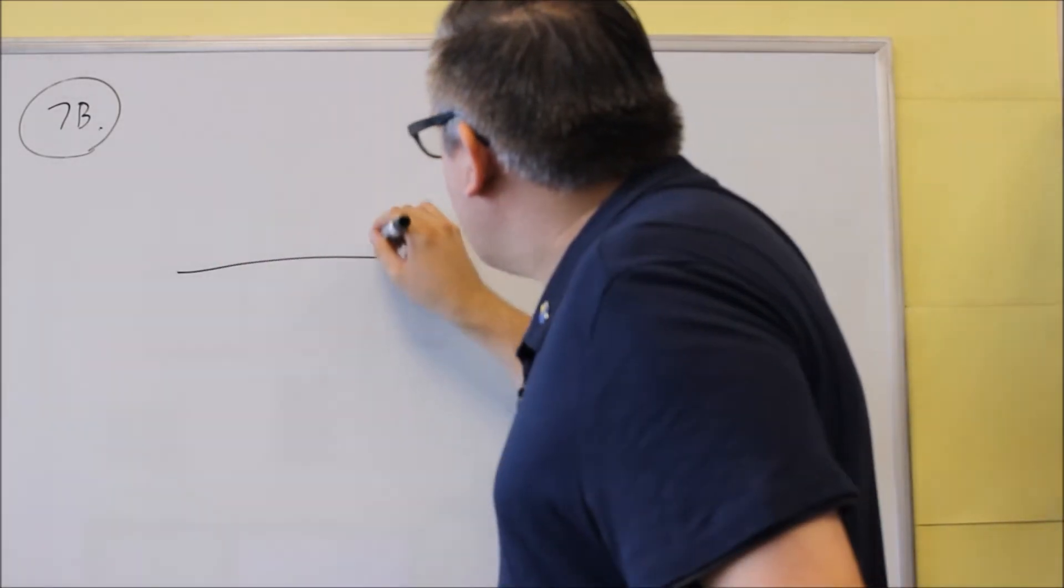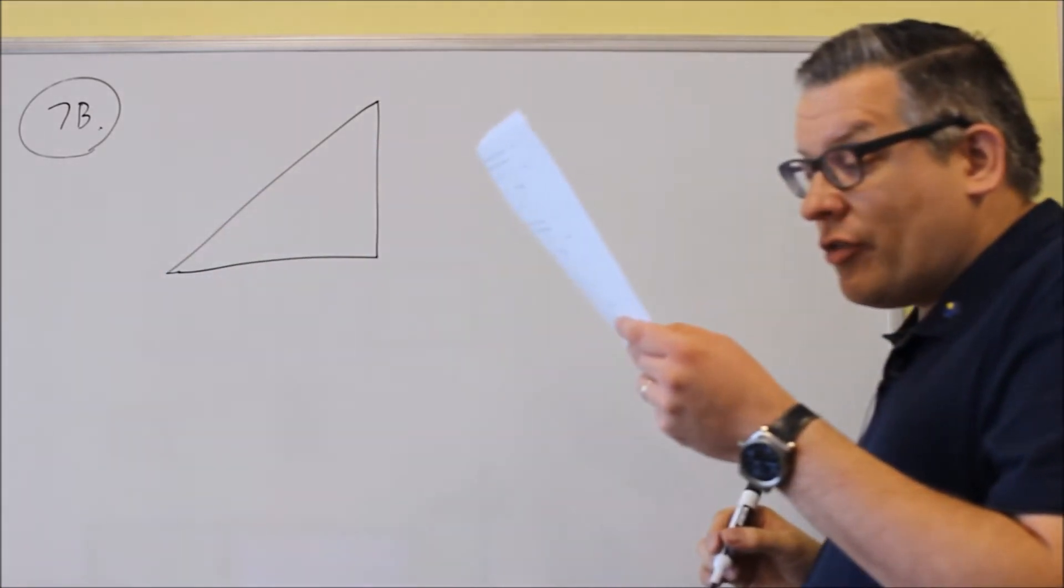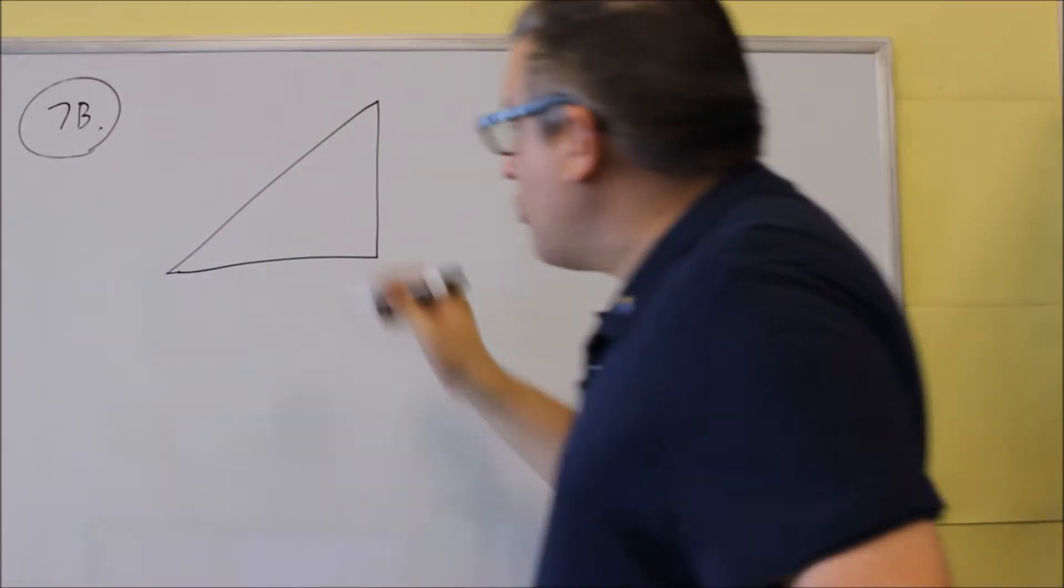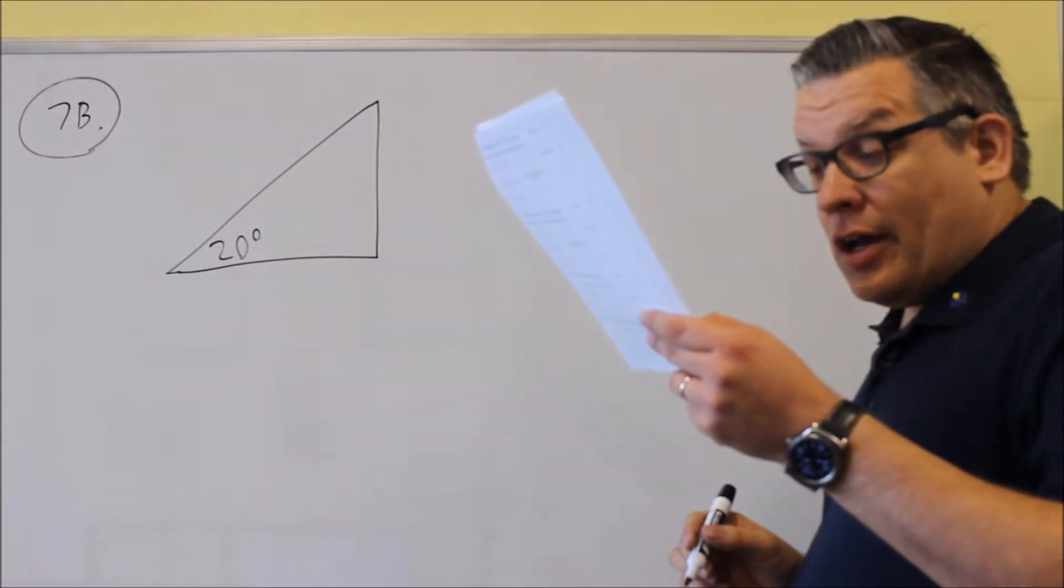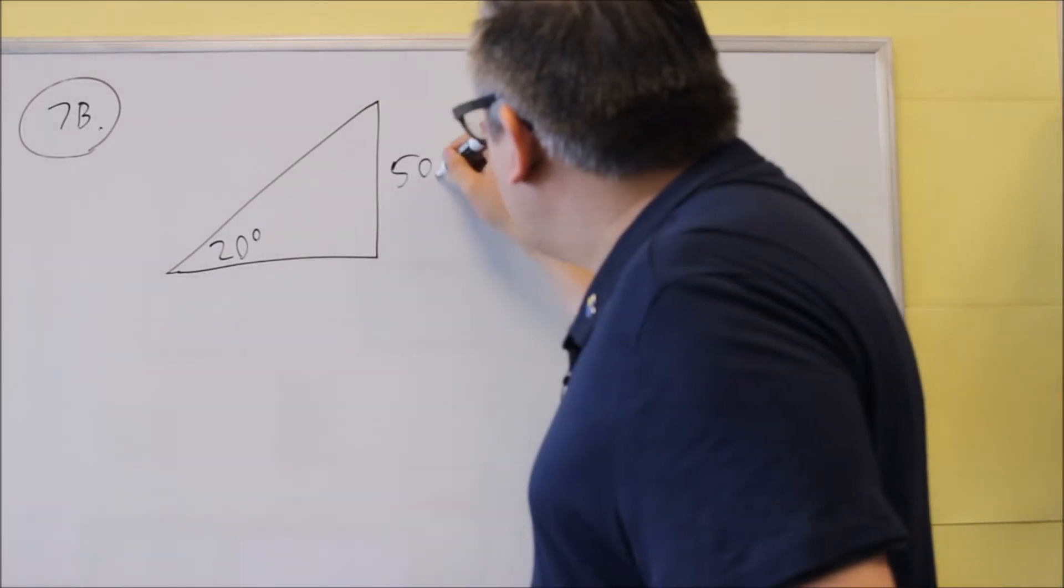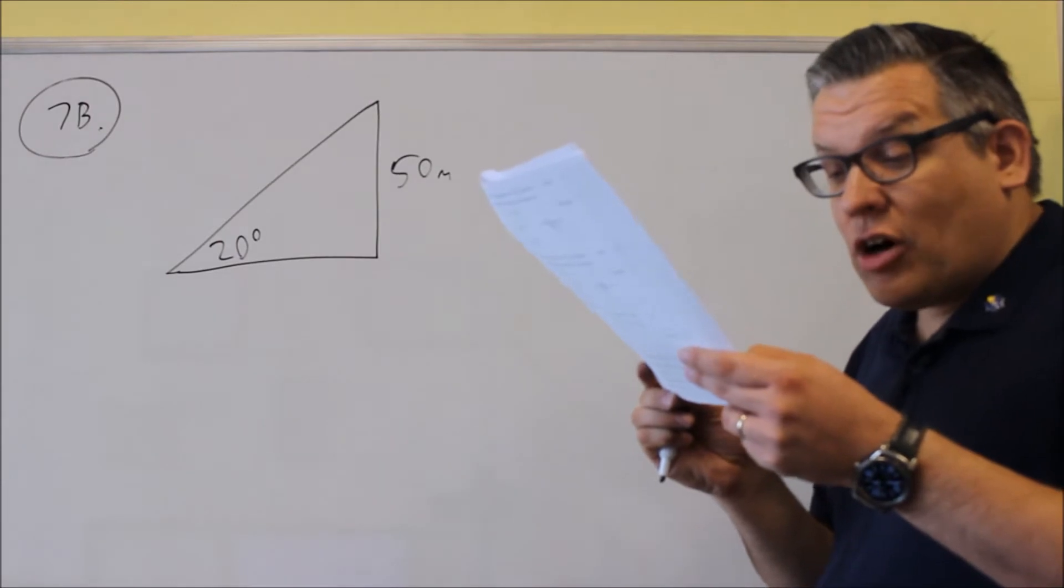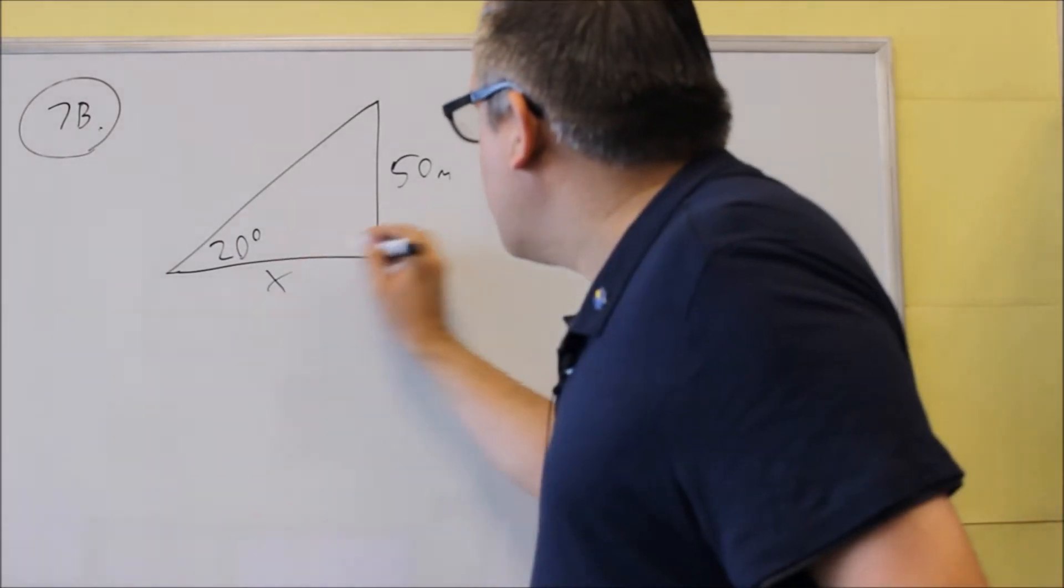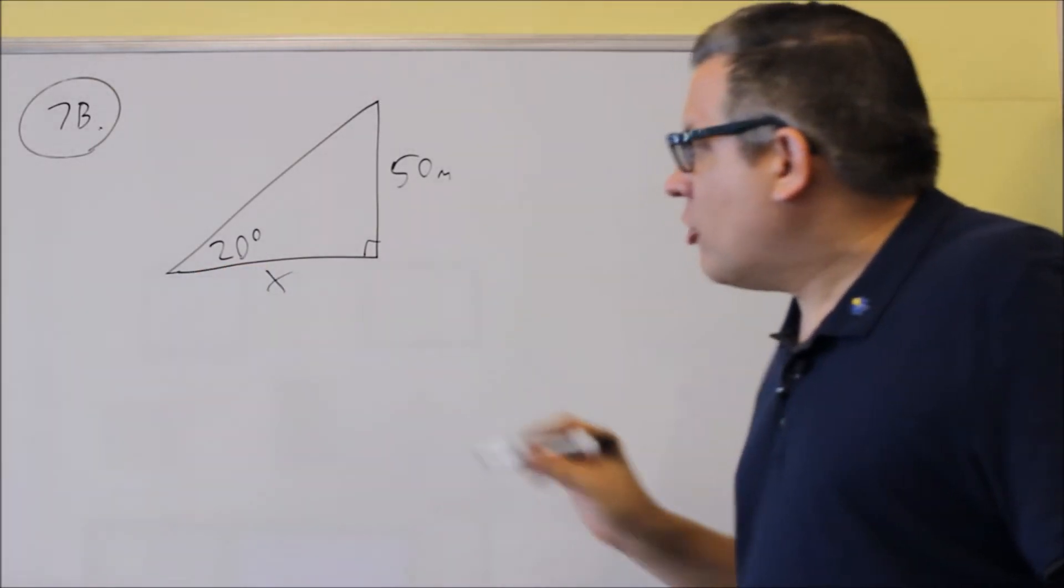So here is the scenario. We're going to draw a triangle. It says the angle of elevation to the plateau is 20 degrees, and the plateau is 50 meters high. So it's 50 meters there. It says how far are you from the base of the plateau? That means that you'd be solving for x down there. How far are you from the base? That would be that.